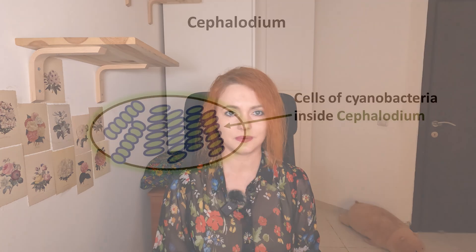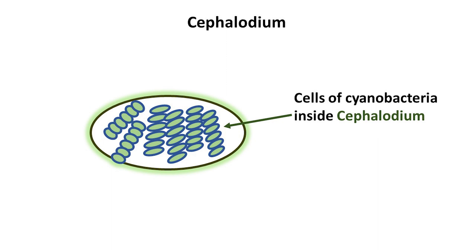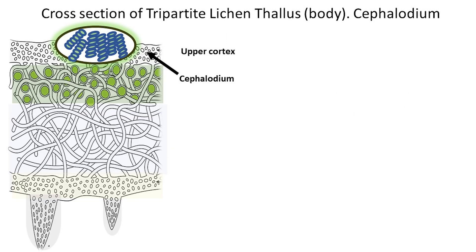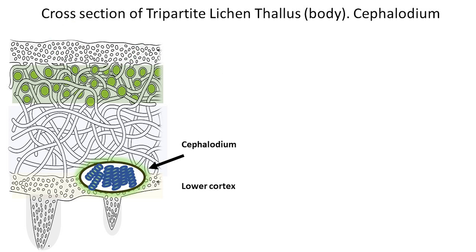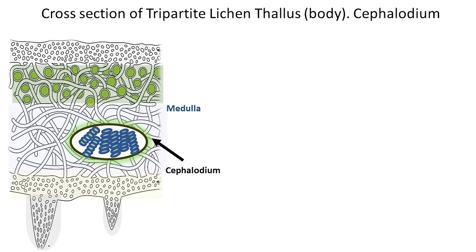In the case of lichens that have both photobionts — alga and cyanobacteria — the cyanobacterial cells are limited in distribution along the thallus and are located in specific structures called cephalodia. Depending on the lichen species, cephalodial structures may be located in the upper cortex, lower cortex, or medulla.